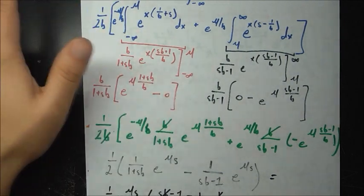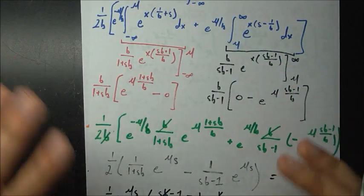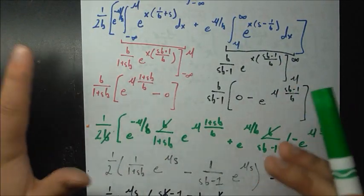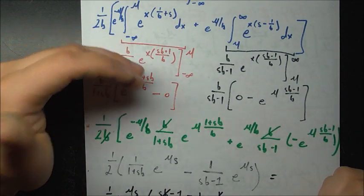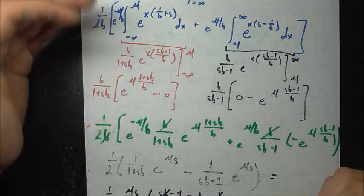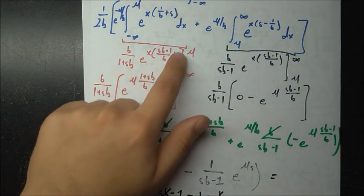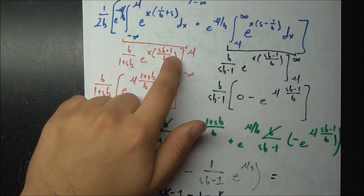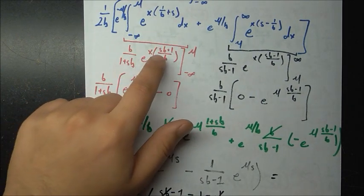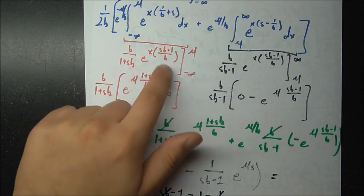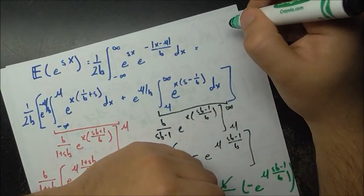When plugging in negative infinity for x, we need the coefficient s·b plus 1 over b to be positive so the exponential goes to zero and we get convergence. Otherwise this integral goes off to infinity and the whole thing fails.